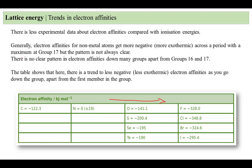However, the pattern is not always clear down many groups, apart from groups 16 and 17. For group 17 (halogens) and group 16, the table shows a trend toward less negative — less exothermic — values going from chlorine to bromine to iodine, or from sulfur to selenium to tellurium. Going down the group, the electron affinity becomes less exothermic.